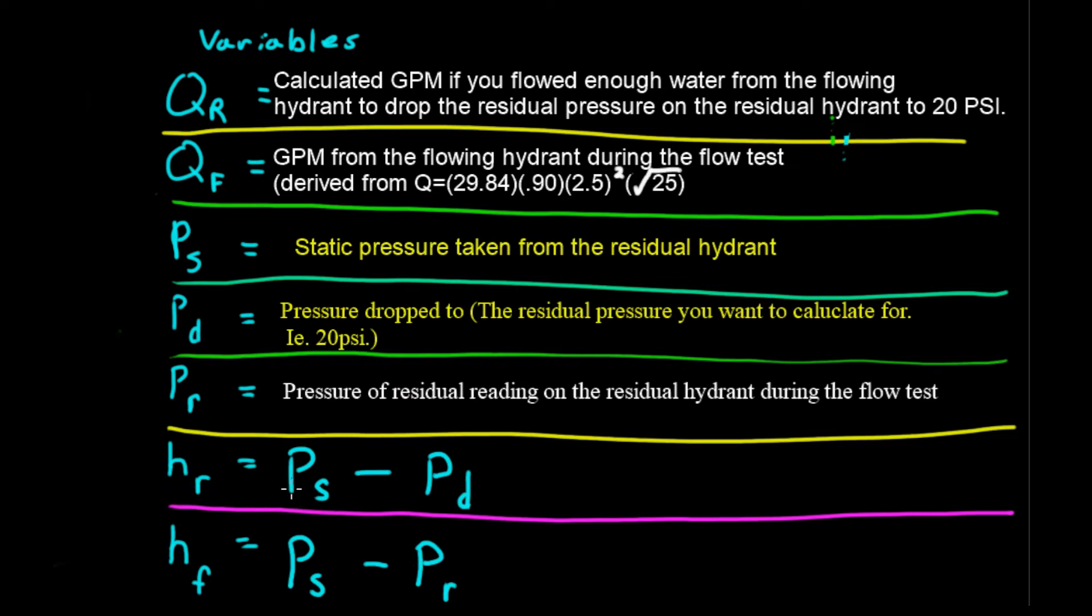So, the HR is actually static pressure taken for residual hydrant minus pressure drop 2. That's the desired one. We're going to use 20. Again, there's static pressure. And pressure of residual hydrant during a flow test is PR.